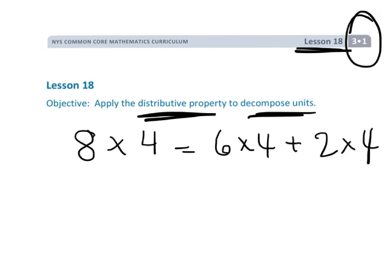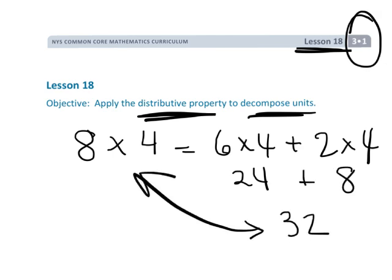This is 24, this is 8, so the answer is 32. So 8 times 4 is 32 and that's how they're going to develop that fluency with their multiplication and eventually memorize them because that's exactly what we want.